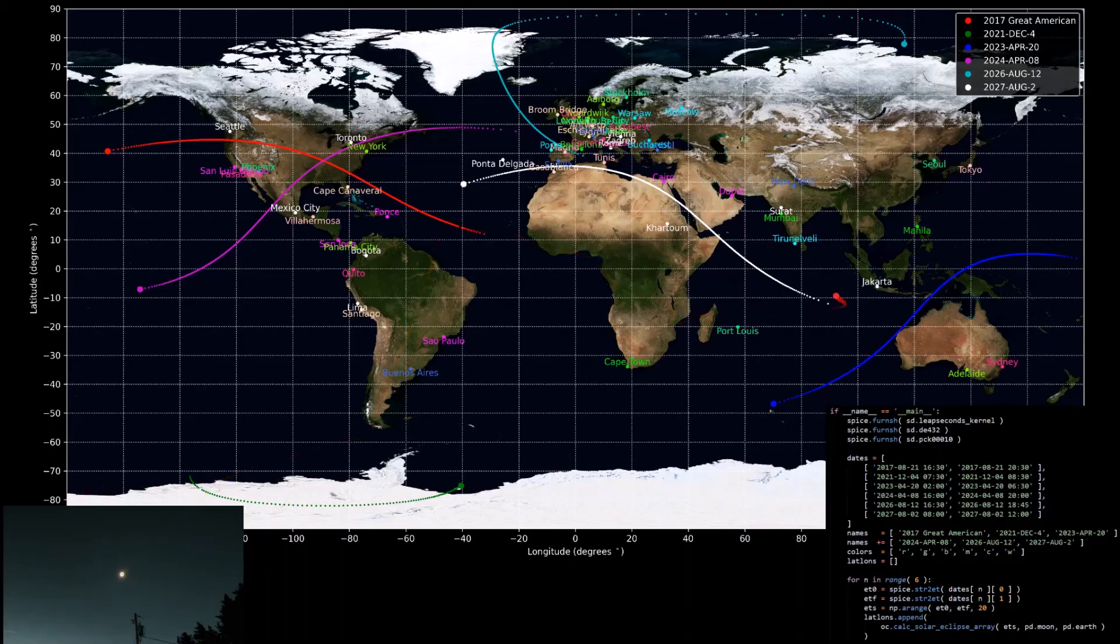And this also includes all solar eclipses for the next five years, where the next one is actually happening next week, 2021 December 4 over Antarctica. And all the dates for all the other eclipses are in the legend here on the top right.